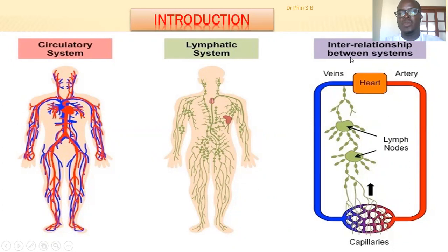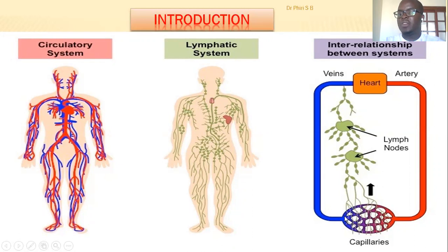Here you can appreciate the two systems — the circulatory system and the lymphatic system — and the interrelationship between them. You can see the heart, the veins and arteries, and at the center the lymph vessels and lymph nodes. From the tissues, where you have capillaries, fluids can move from the capillaries to the tissues — this fluid is called the interstitial fluid.